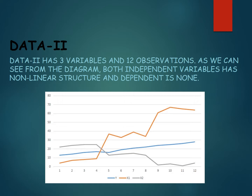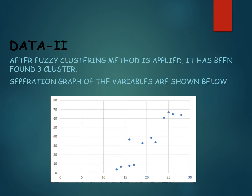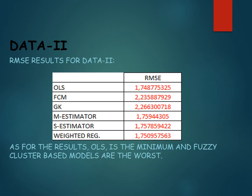Data 2 has three variables and 12 observations. As we can see from the diagram, both independent variables have a non-linear structure and the dependent does not. After the fuzzy clustering method is applied, three clusters are formed. The RMSE results show that ordinary least squares is the minimum, but the fuzzy cluster-based models are the worst.